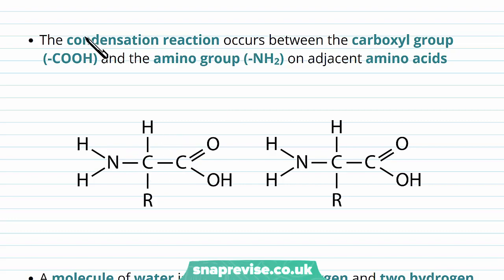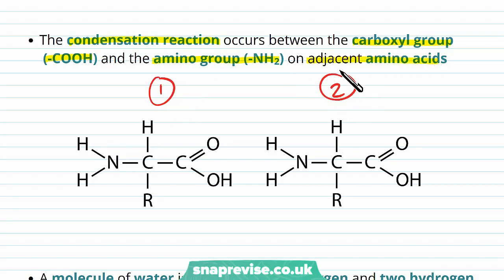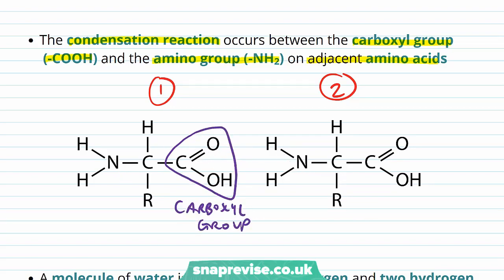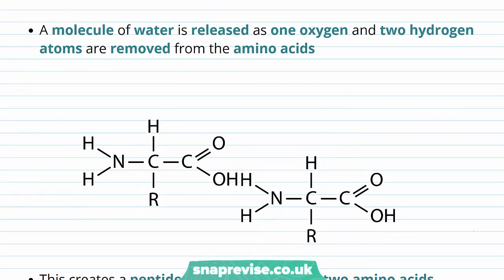Looking at this at a more chemical level, the condensation reaction occurs between the carboxyl group (COOH) of one amino acid and the amino group (NH2) of the other. Here we have amino acid one and two. Remember amino acids have constant groups — only the R group differs — but they all have a carboxyl group and an amino group, and it's these two which come together to connect them into a dipeptide. As with any condensation reaction, a molecule of water is released as one oxygen and two hydrogen atoms are removed from the amino acid pair.